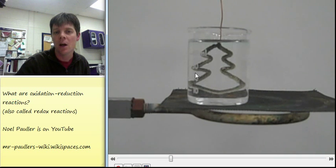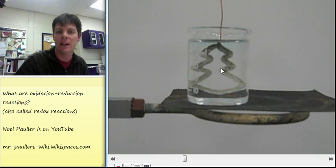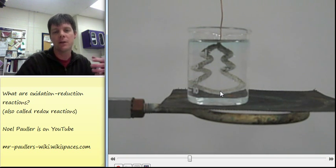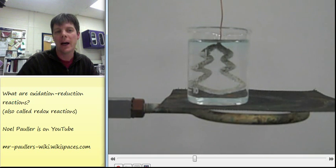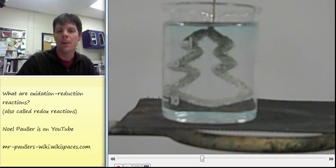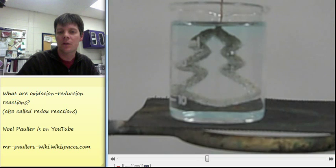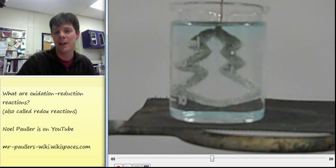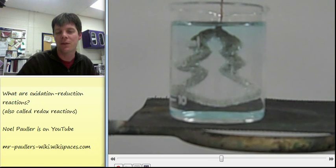We can see the precipitation of solid silver along the outline of the tree. The other thing that I want you to notice is that the liquid inside of the beaker is turning kind of a blue color. This is because of the formation of the copper nitrate solution that will produce a blue tint. So we're seeing really nice evidence of this chemical change.